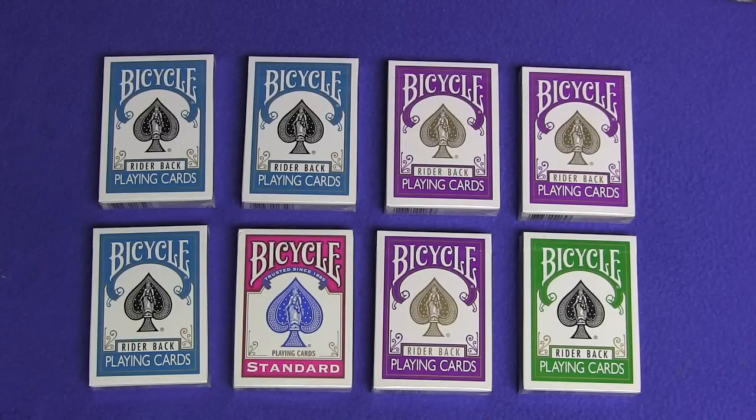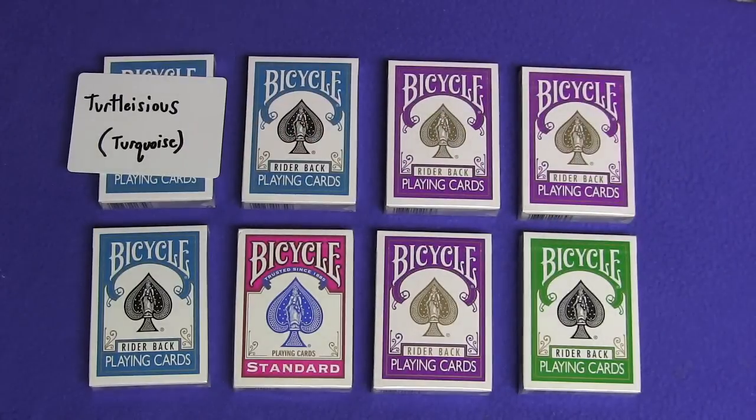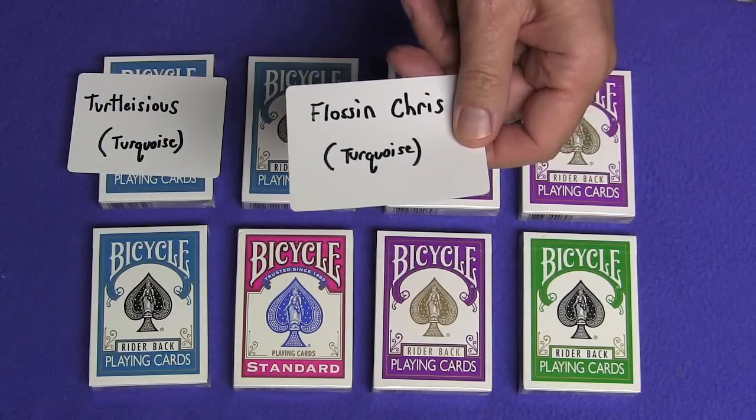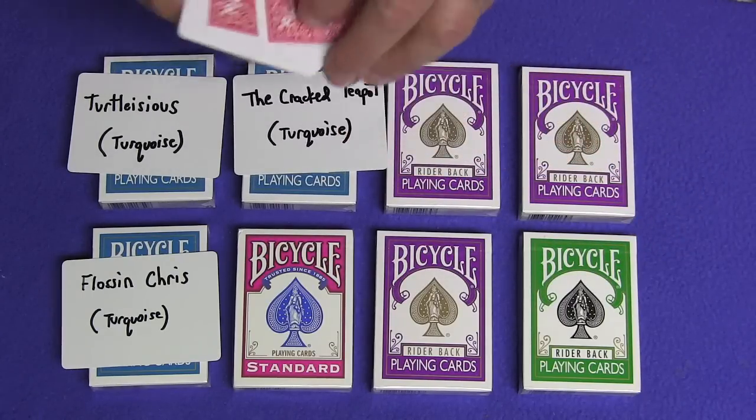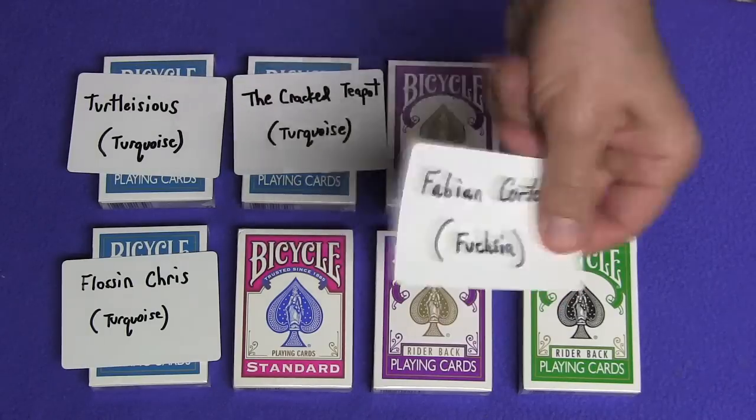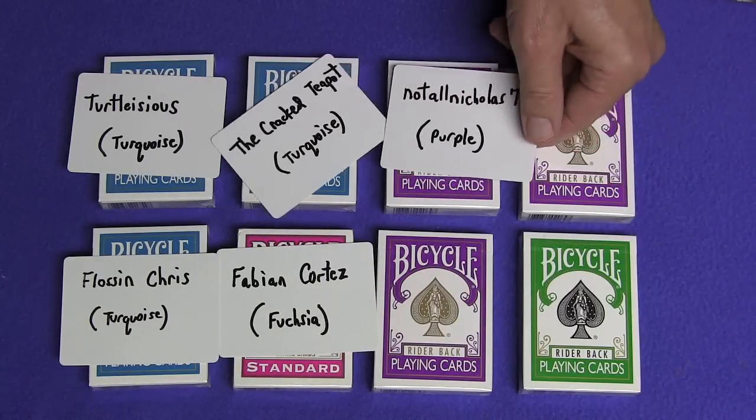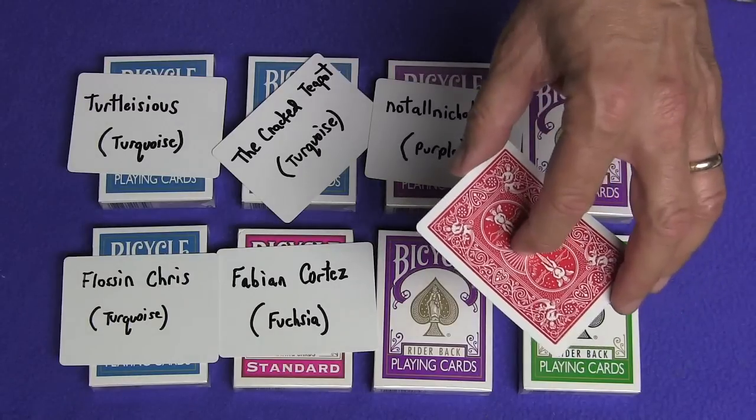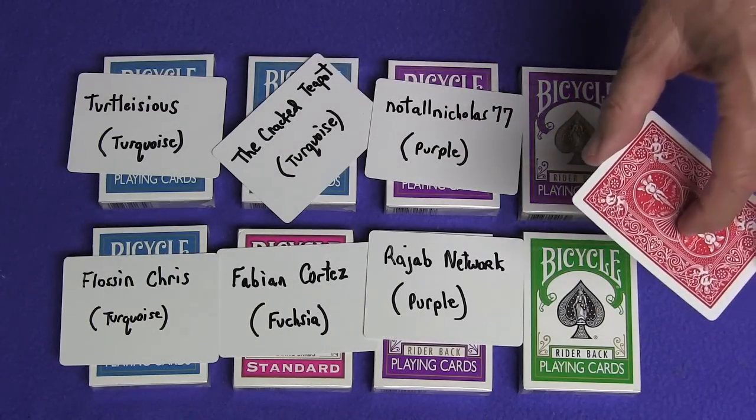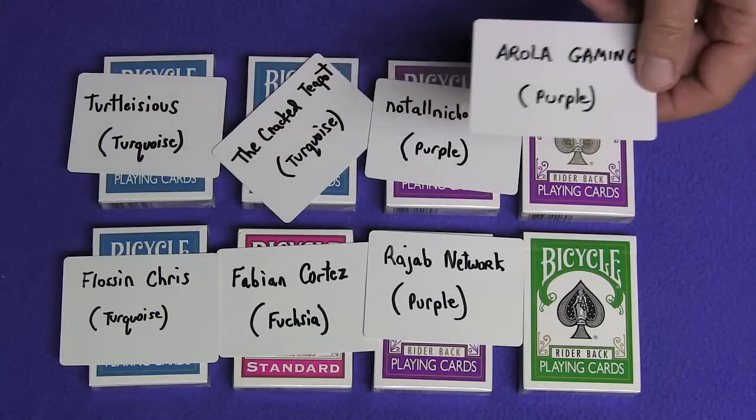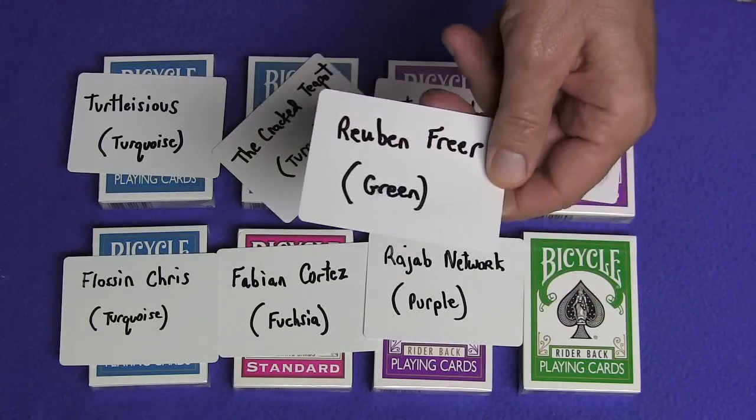Here are the winners of the signed bicycle decks from my last video. Winning a turquoise deck goes to Turtelicious. Winning another turquoise deck goes to Floss and Chris. Winning another turquoise deck goes to The Crack Teapot. Winning a fuchsia deck goes to Fabian Cortez. Winning a purple deck goes to NotAllNicholas77. Winning another purple deck goes to Rajab Network. Winning another purple deck goes to Arola Gaming. And winning a green signed bicycle deck of cards goes to Ruben Freer.